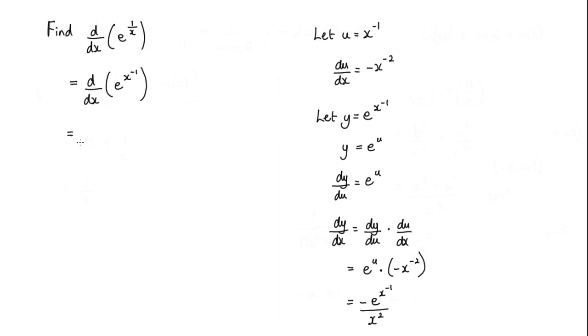So far what we have is negative e to the x to the minus 1 over x squared. Now we can rewrite this here as e to the 1 over x. And that's still over x squared.